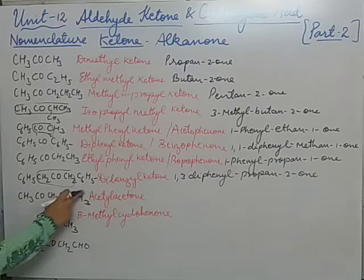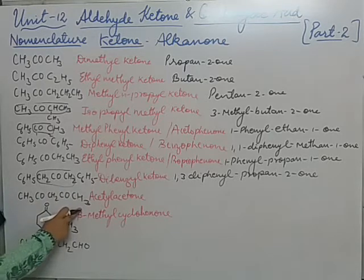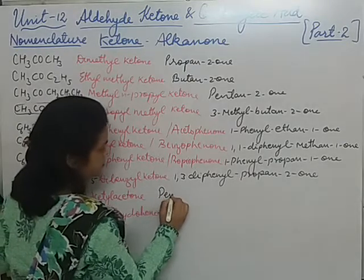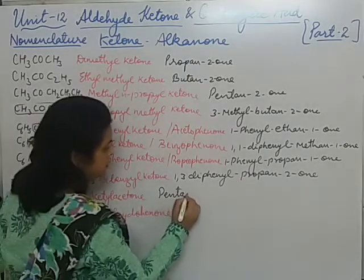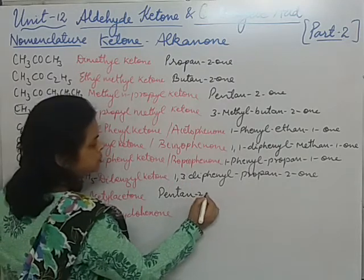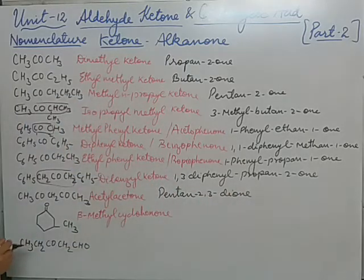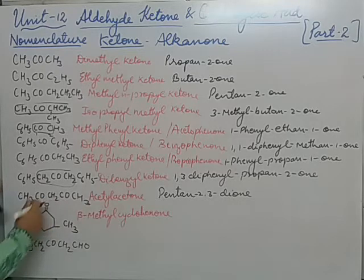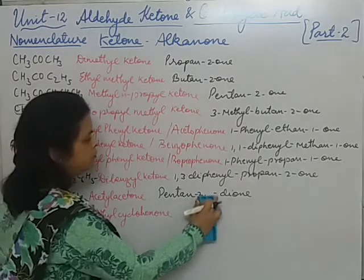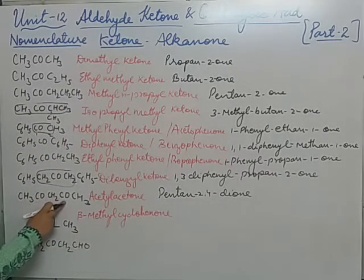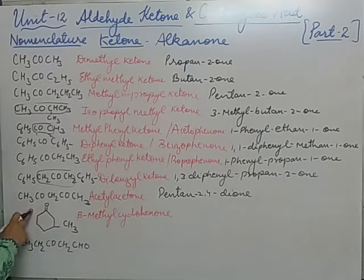Now for this one, taking the 5-carbon chain, we write the primary suffix 'an'. Why are we writing 2,4-dione? Because on the second carbon the keto group is there, and on the fourth carbon the keto group is there. So we write pentan-2,4-dione.